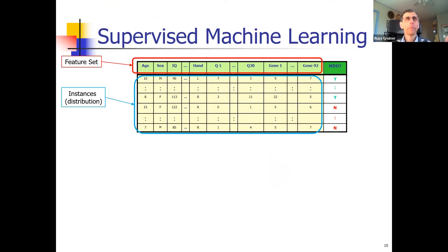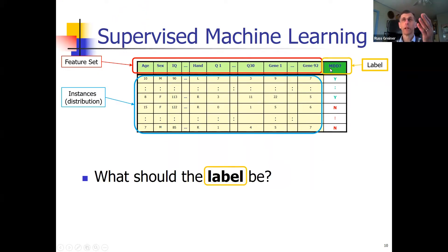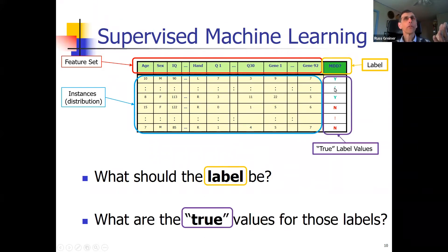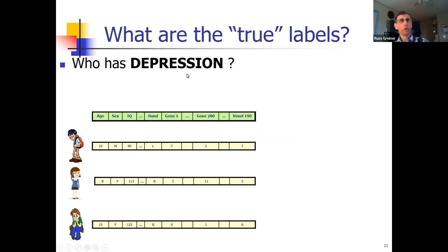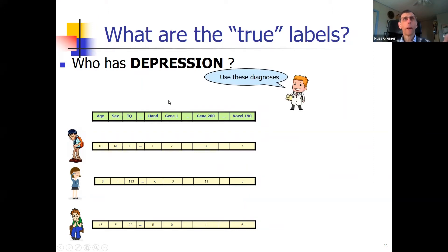Building a database involves features and instances. But the other part is building a label — like does a patient have MDD — and there are true values for those labels. So first, what are the true values? What values should we be using for these different diagnostic or prognostic labels? One approach is to do what the doctor does: here are patient characteristics, and the doctor gives a diagnosis — yes, no, yes, that patient.